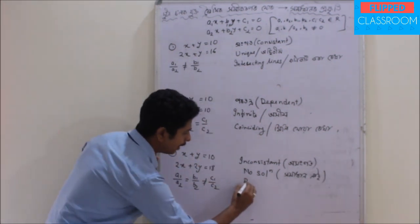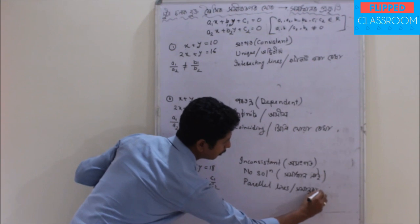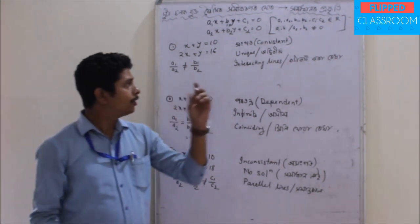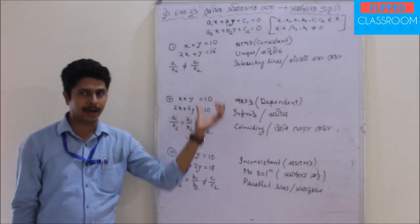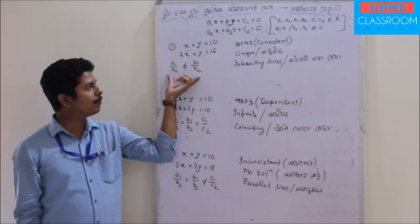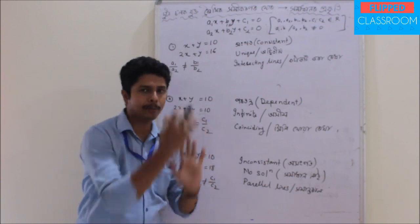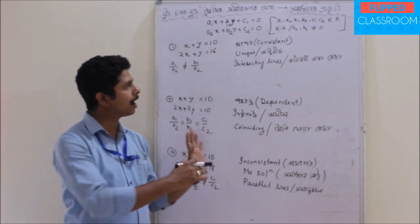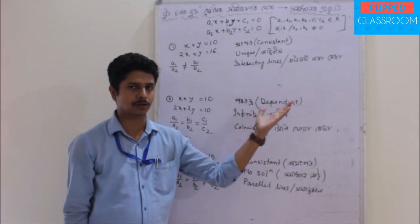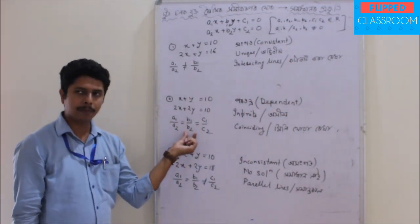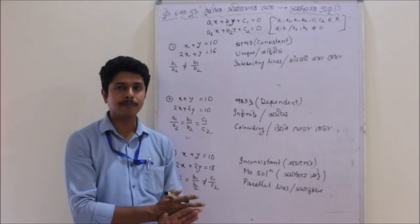This requires parallelism — the lines are parallel. If a1 by a2 is equal to b1 by b2 but not equal to c1 by c2, then we have an inconsistent system. We have no solution — the lines do not intersect.